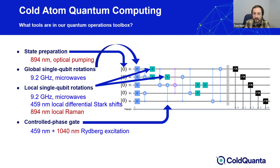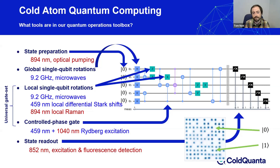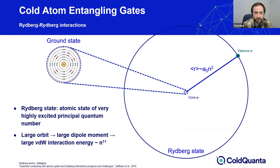Entangling gates — the subject of the remainder of the talk — use a controlled phase gate driven using Rydberg excitation. The controlled phase operation can be turned into a controlled NOT operation with just a couple of single qubit state rotations. Local arbitrary single qubit rotations coupled with this controlled phase gate gives us a universal gate set that we can decompose any arbitrary circuit into. Finally, for state readout, the computational state is mapped onto a fluorescent state and the fluorescence of all atoms in the array is simultaneously measured by taking a picture under excitation.